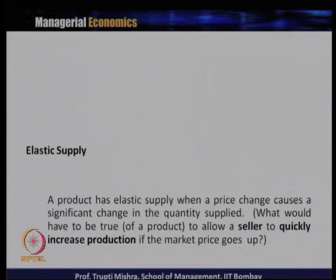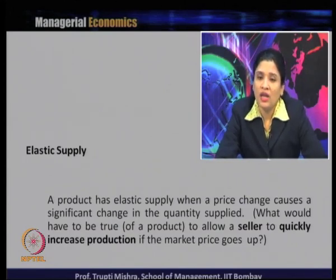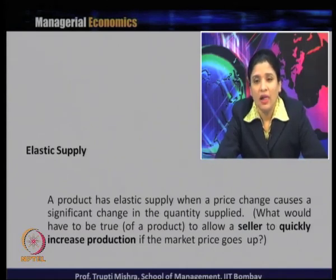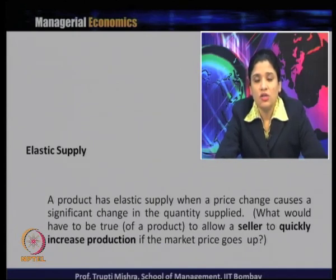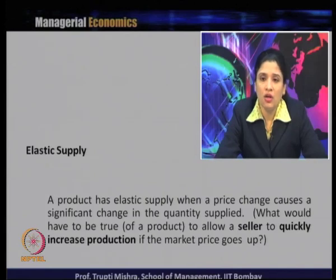A product has elastic supply when a price change causes a significant change in quantity supplied. The question is whether a seller can quickly increase production if the market price goes up. In reality, there is always a timeline required to produce the product, so a seller cannot always immediately increase production.